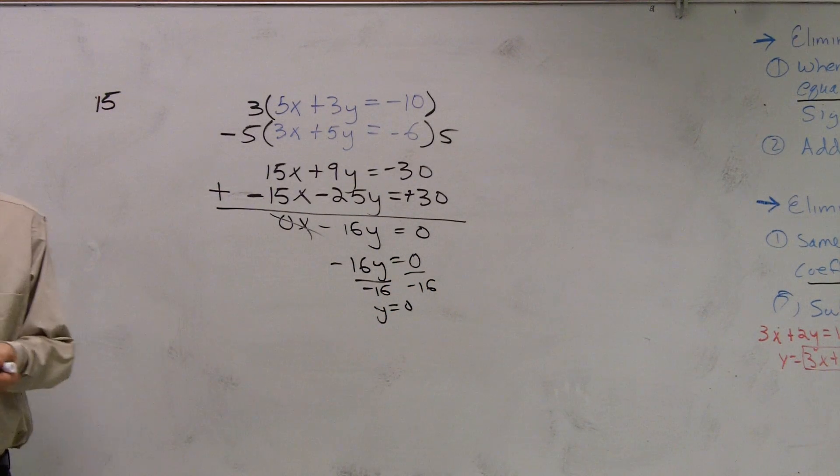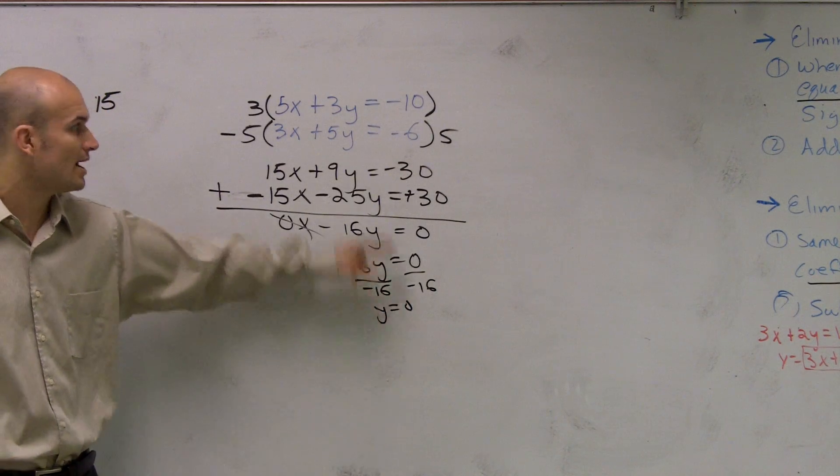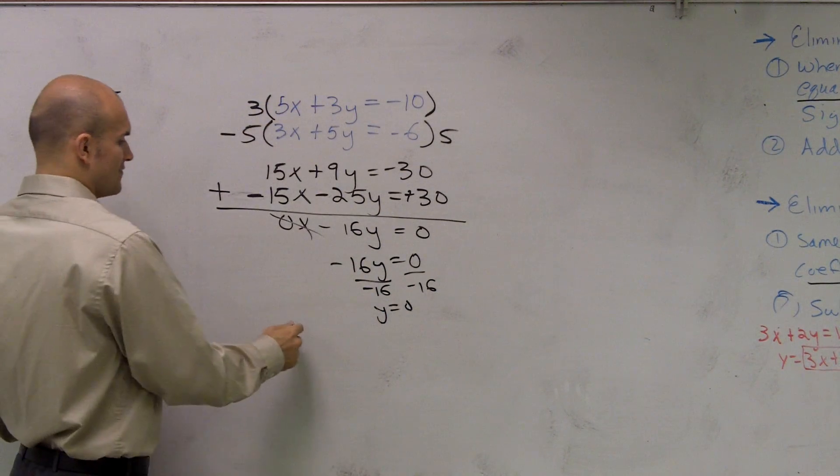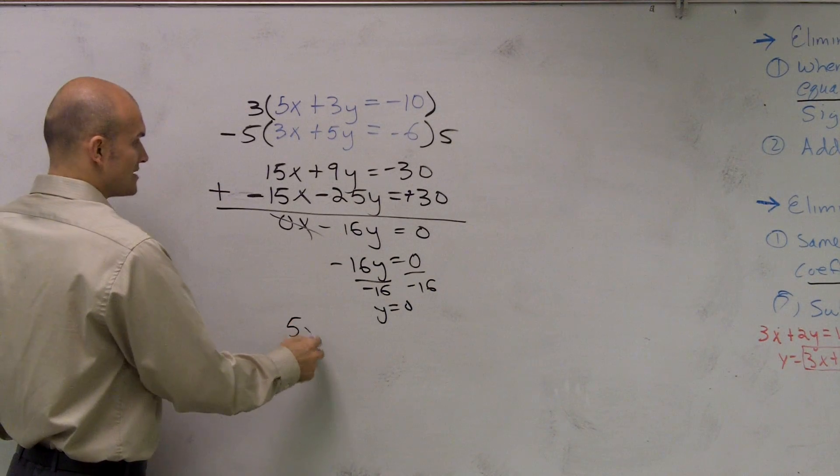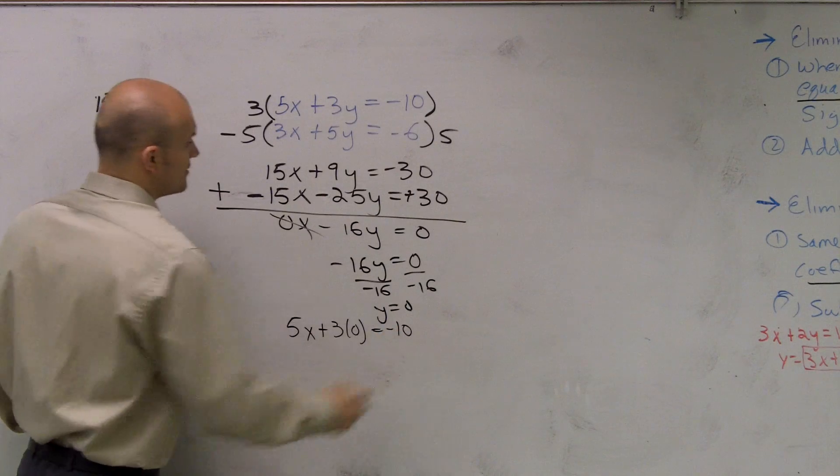Remember, that's the only part of my problem. To figure out the rest of it, I need to plug 0 in for y into my top equation. So I have 5 times x plus 3 times 0 equals negative 10.